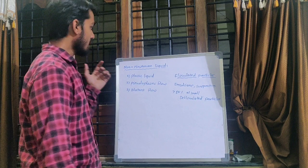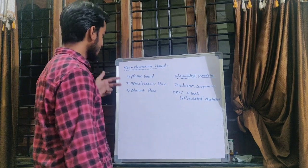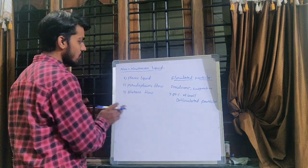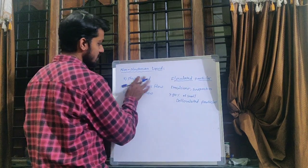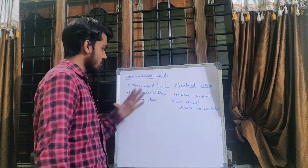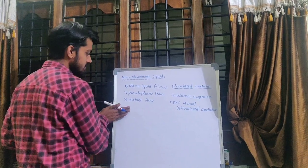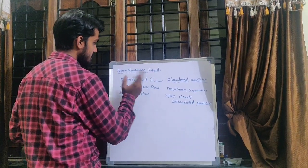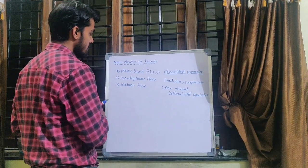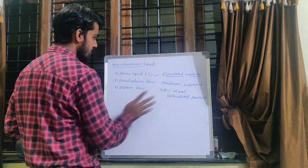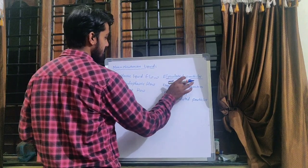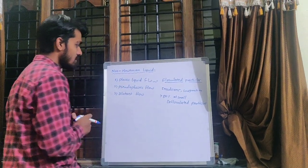Non-Newtonian liquids are further classified into three types: first is plastic flow, second is pseudoplastic flow, and third is dilatant flow. In the case of plastic liquid flow, there is a presence of flocculated particles in that kind of liquid.